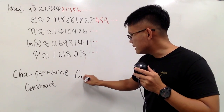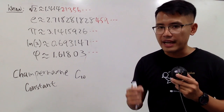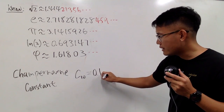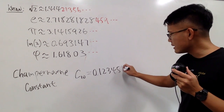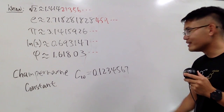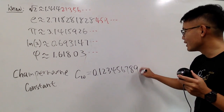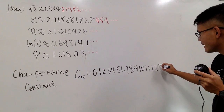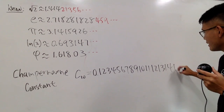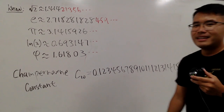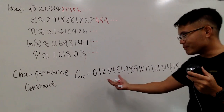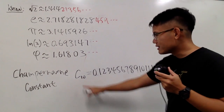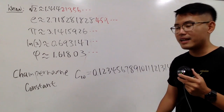The notation for it is C₁₀ — the 10 is because it's base 10. The decimal expansion is 0.1234567... what's next? Yes, it's 8. What's next? It's 9. What's next? It's 10, then 11, then 12, then 13, then 14, then 15, and so on. You pretty much put all the numbers right next to each other and group them together — that's the Champernowne constant.